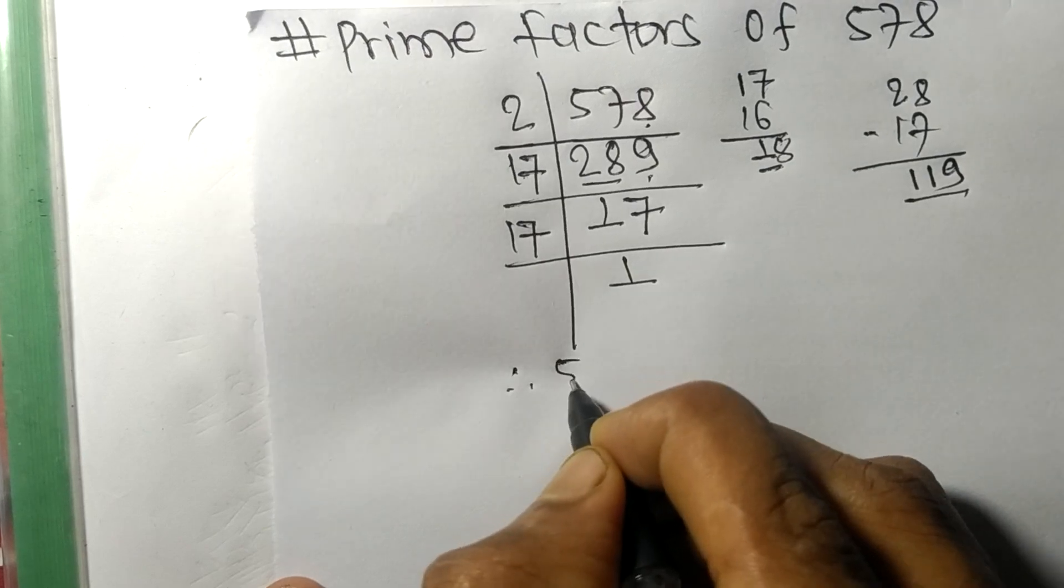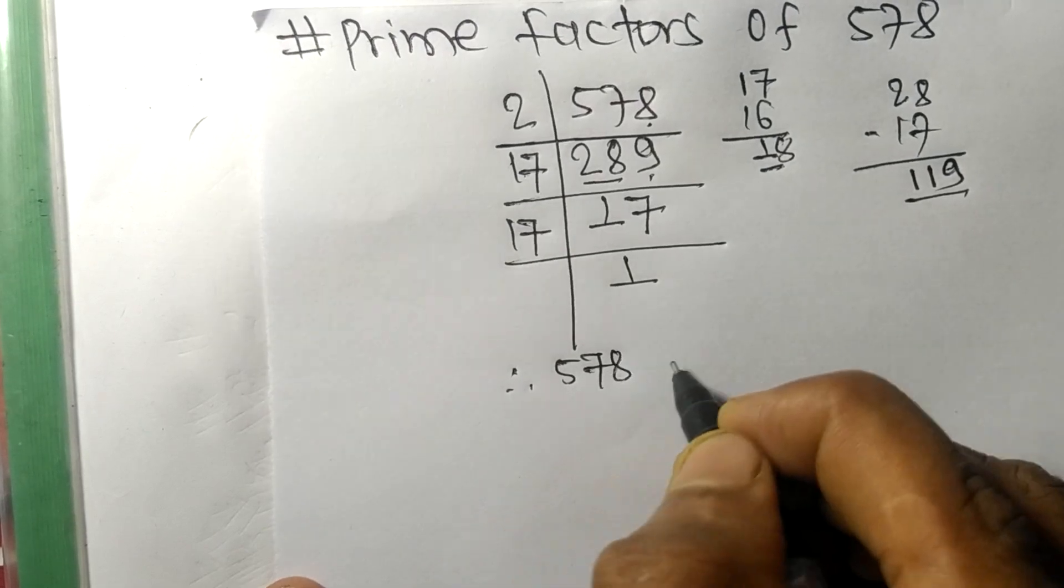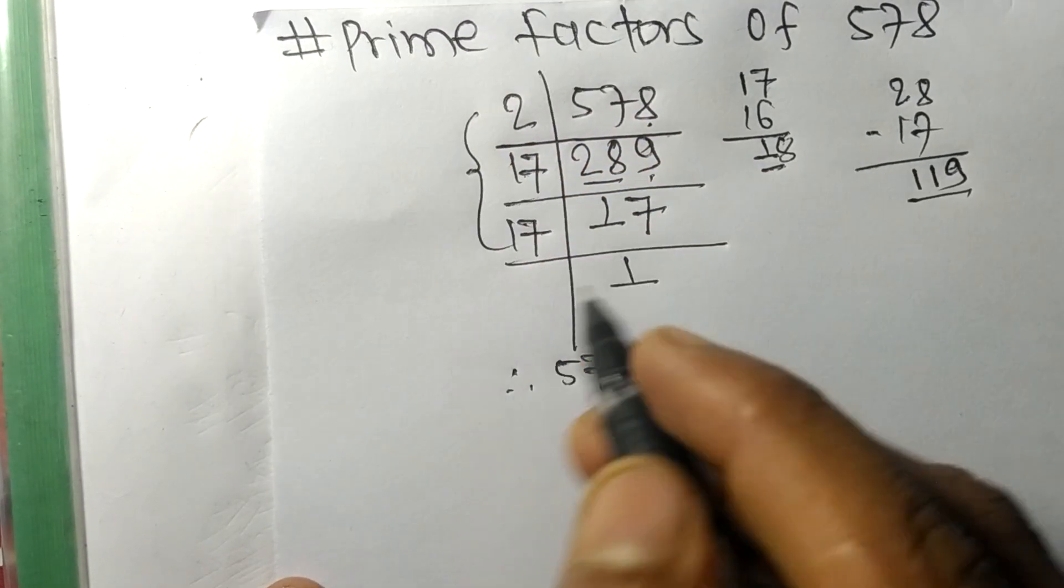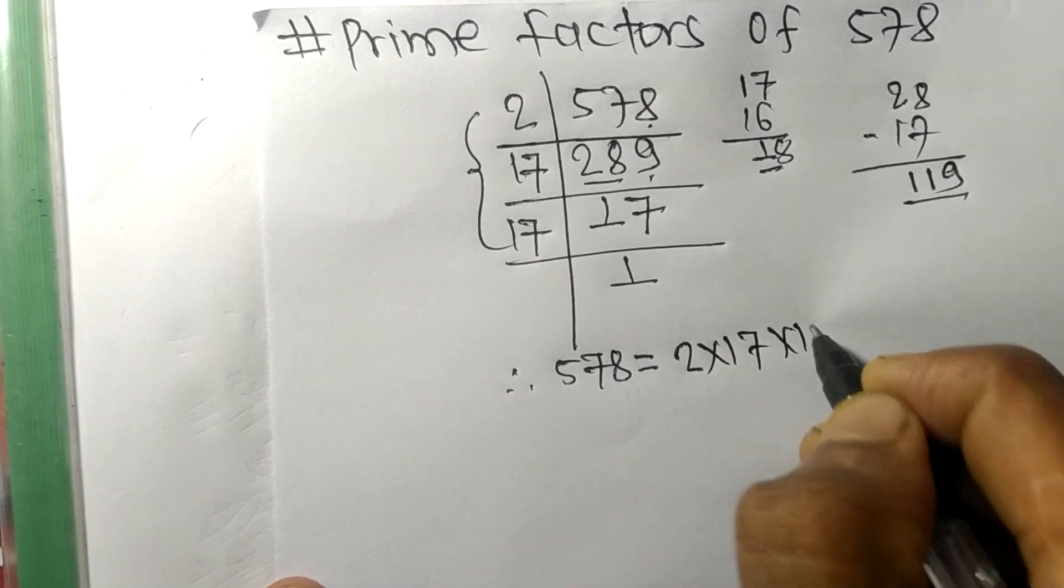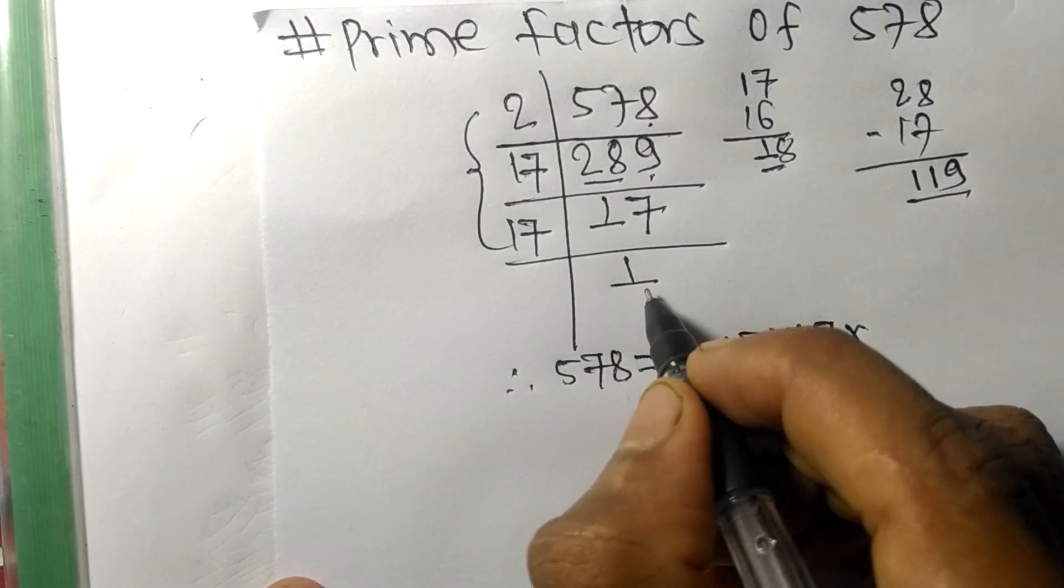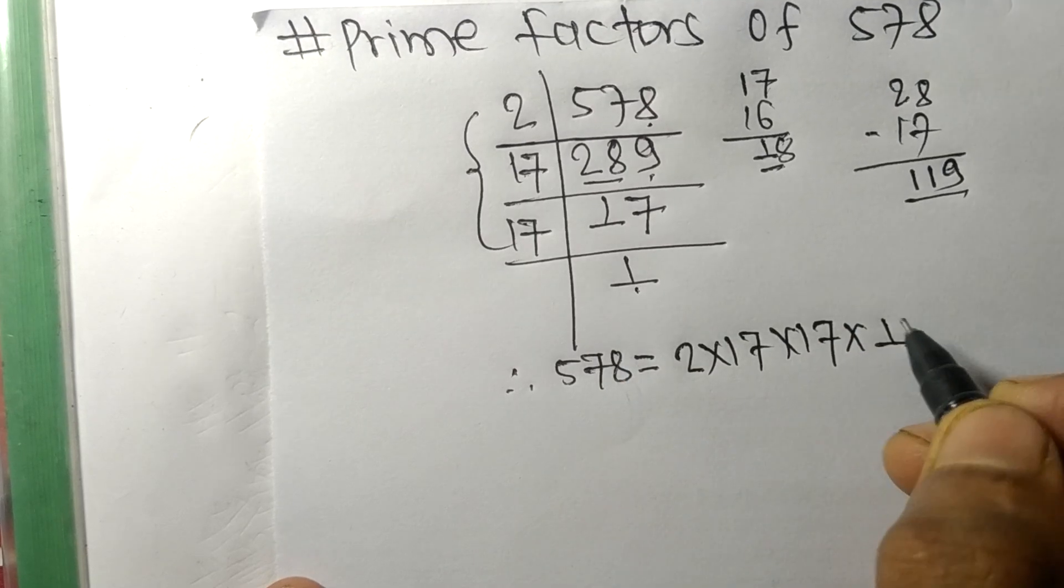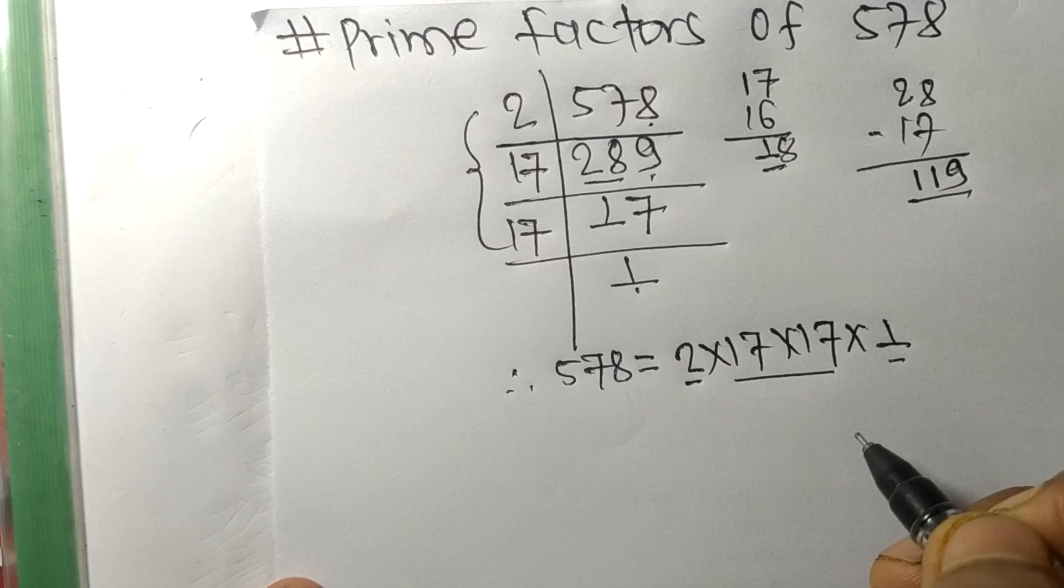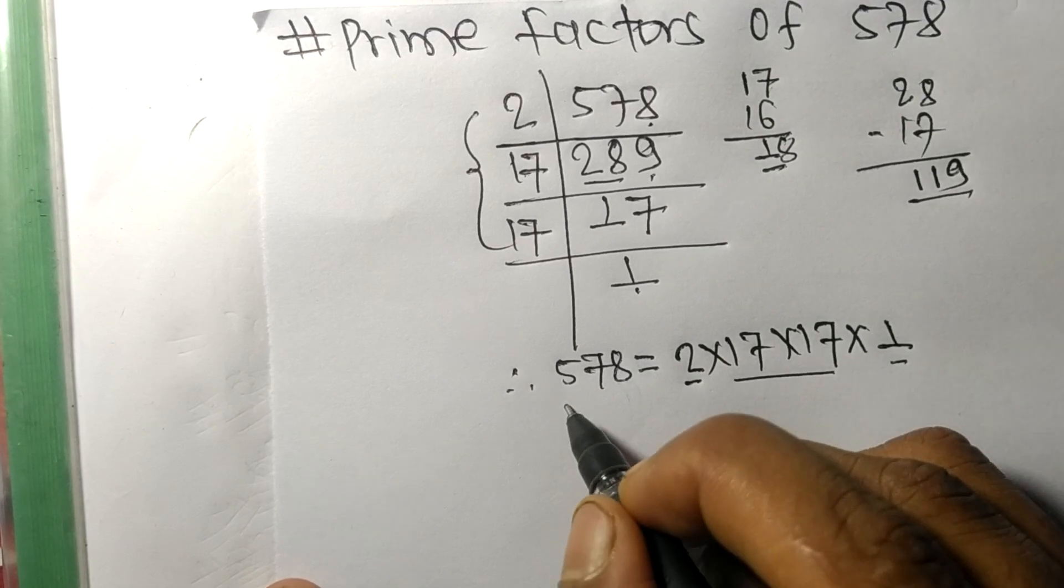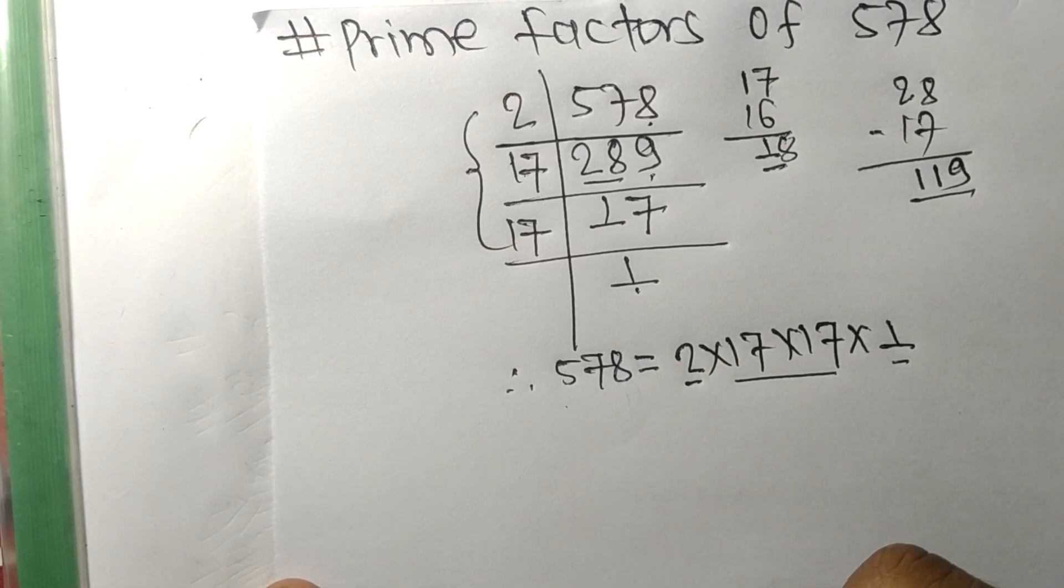Therefore, 578 is equal to 2 times 17 times 17. So 2, 17, and 1 are the prime factors of 578. So this much for today and thanks for watching.